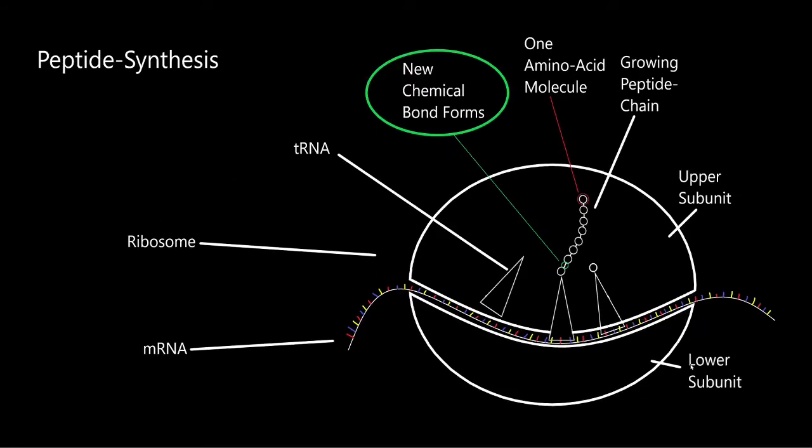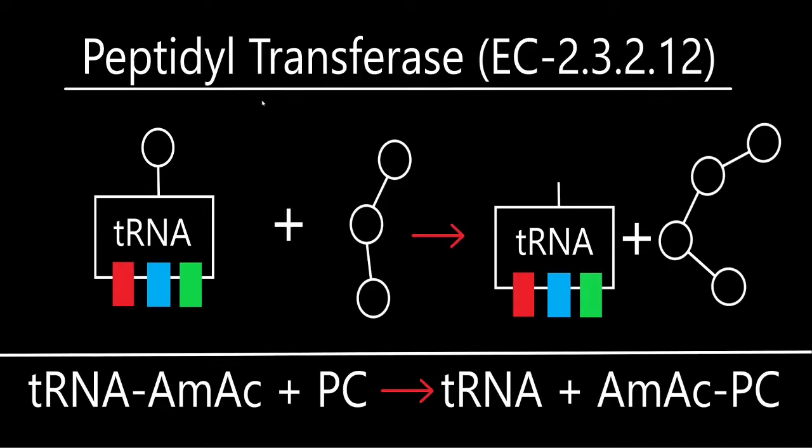Remember in the translation video, when we talked about how the peptides are being formed in the ribosomes? If not, then what the hell are you doing? Go watch that now. Anyways, the tRNA carries the amino acids to the peptide, to the ribosome.